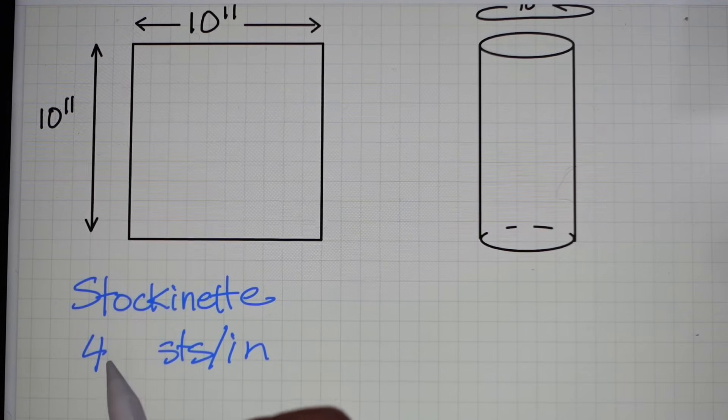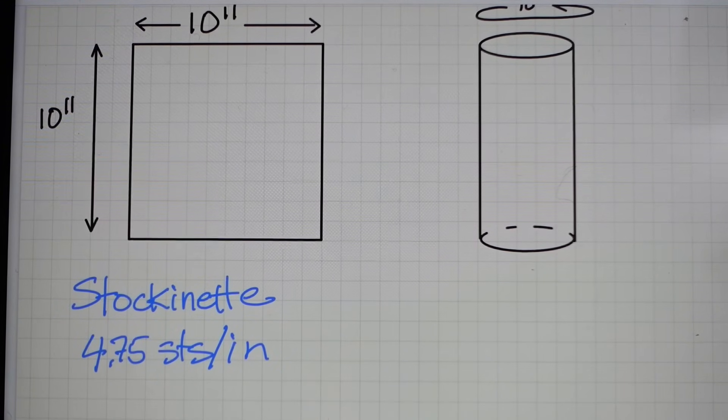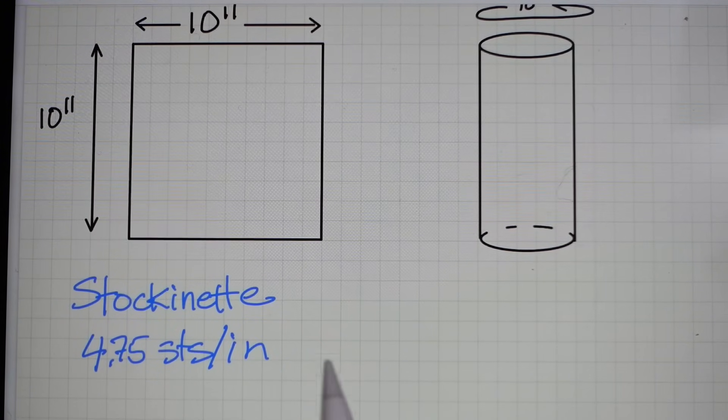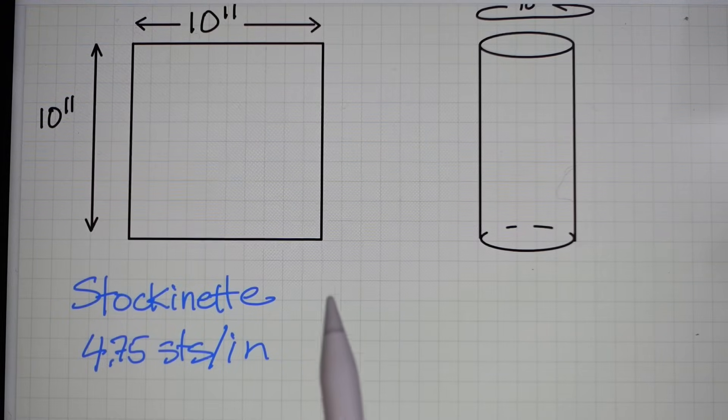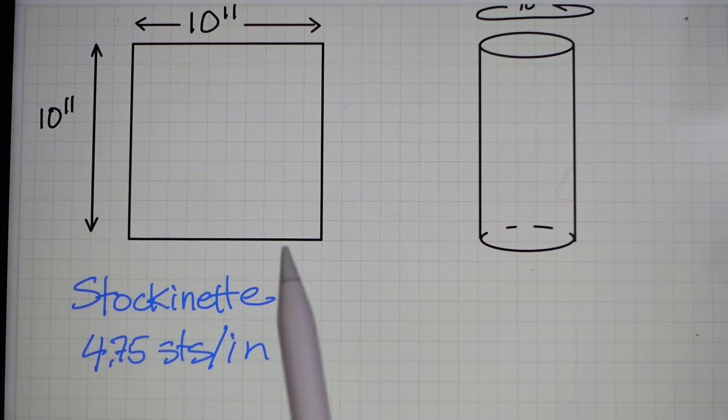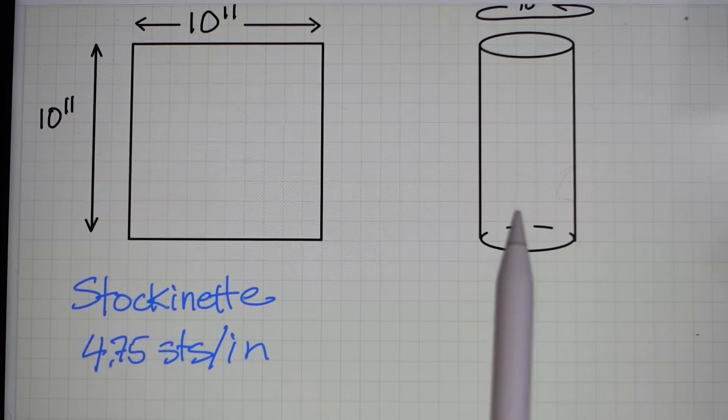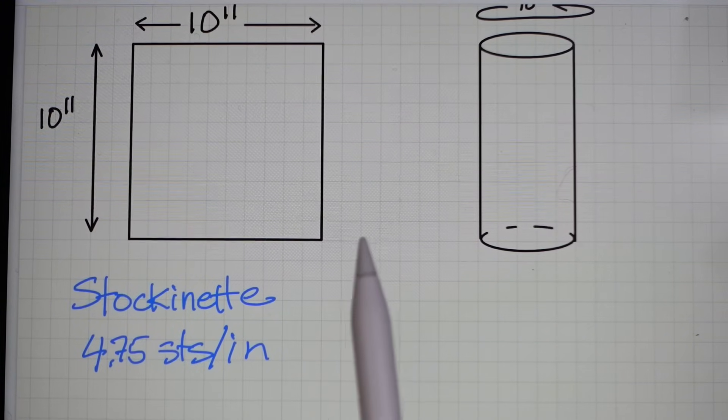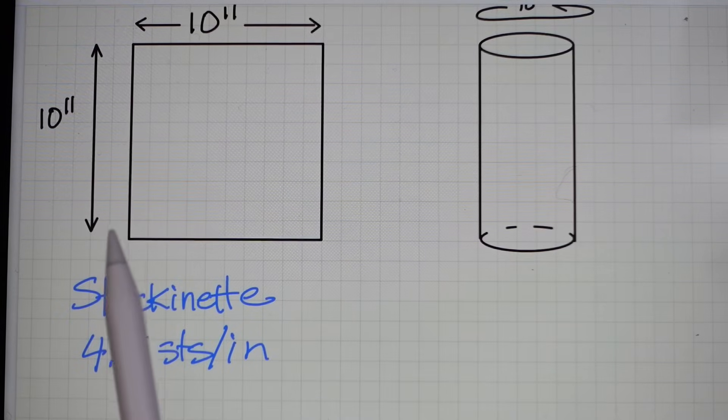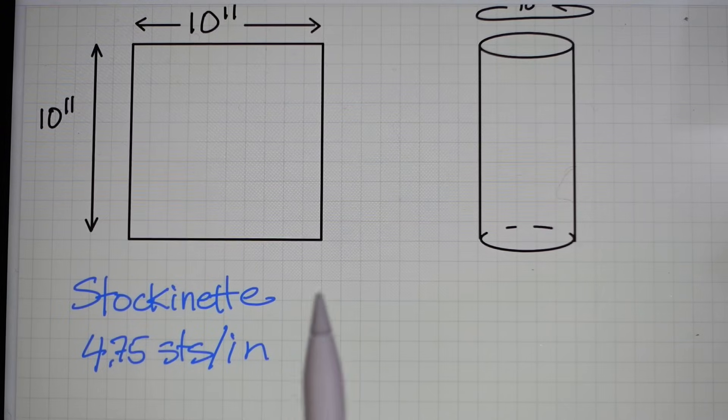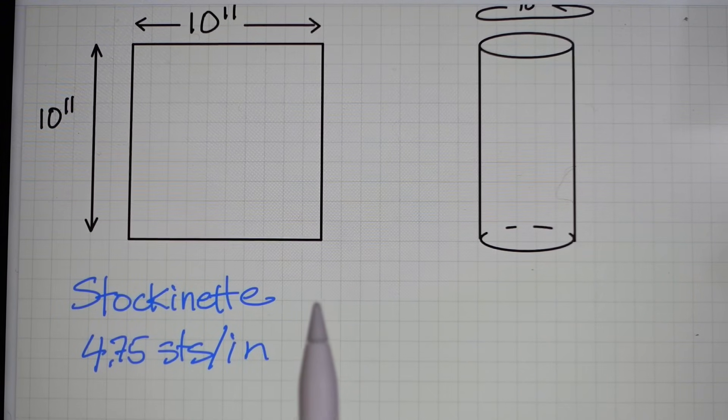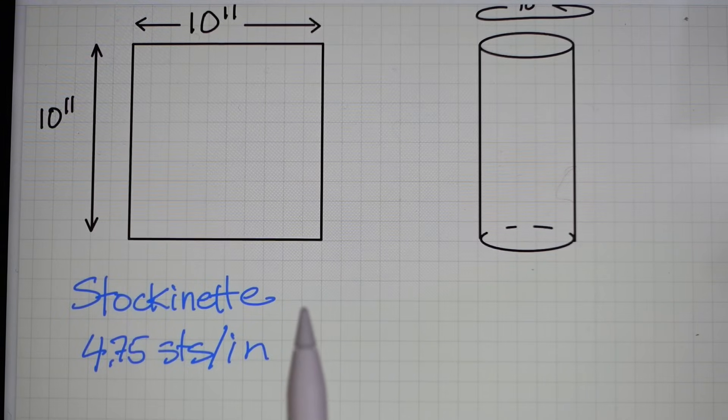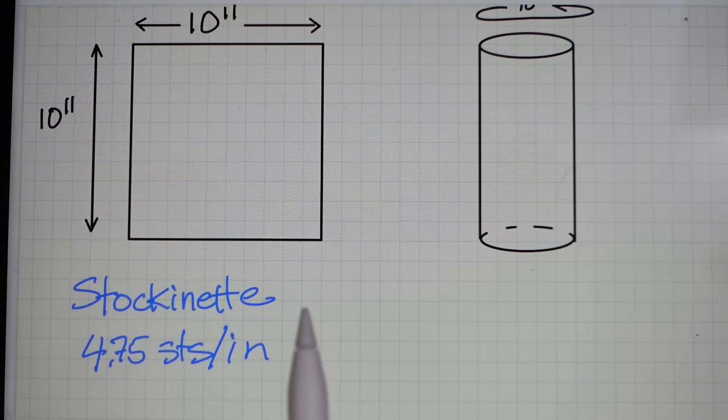What if your gauge was something like 4.75 stitches per inch, not five stitches per inch? Well then when you multiply that by 10, it's going to be 47.5. So you're going to either have to round up or down. So 47 or 48 would work again for either one of these. There's a lot of rounding off in knitting. Oftentimes you can't get exactly the dimension that you want. It's going to be slightly off. And in this case, it's going to be off by an eighth of an inch. Your hand knitting is probably not precise enough for that to make any kind of difference.